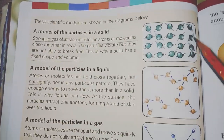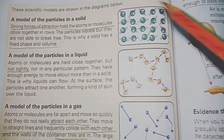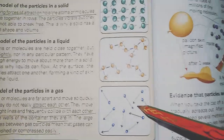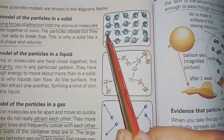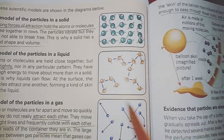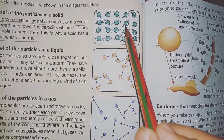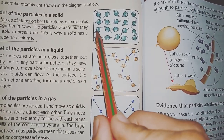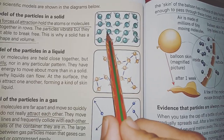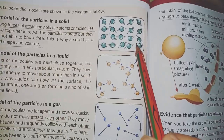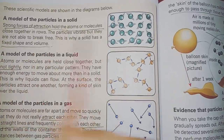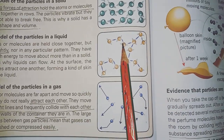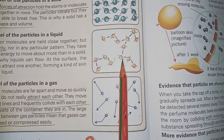In scientific diagrams we represent these particle models. Here is the model of a solid, the model of a liquid, and the particle model of a gas. In the solid model, you can see the molecules are close to each other — these molecules are made up of small tiny particles known as atoms. Being close to each other, they have a force that attracts them, like a magnet, keeping them combined. That is why a solid has a fixed shape and volume.